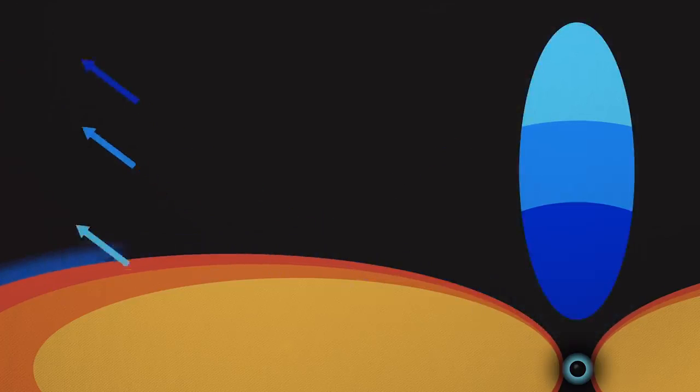Iron atoms in the disk absorb X-rays from the corona and then re-emit them. Gravitational distortion of space-time stretches the wavelengths of the X-rays, reducing their energy. The farther from the black hole they are, the less the light is affected.